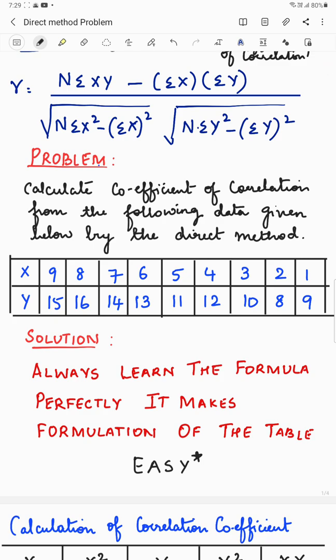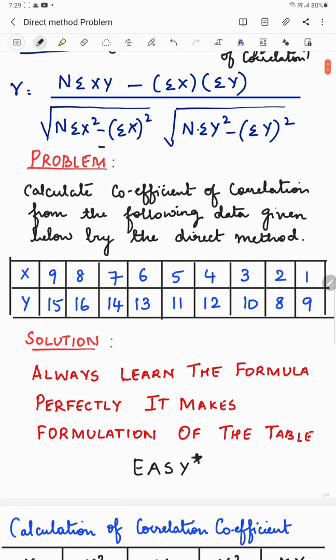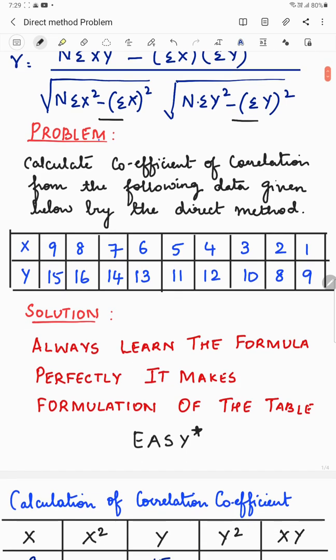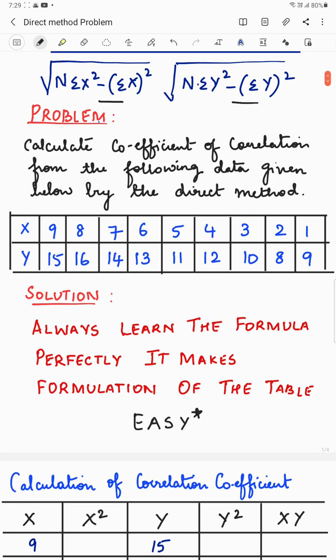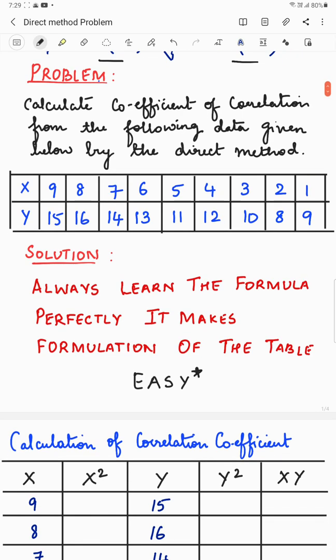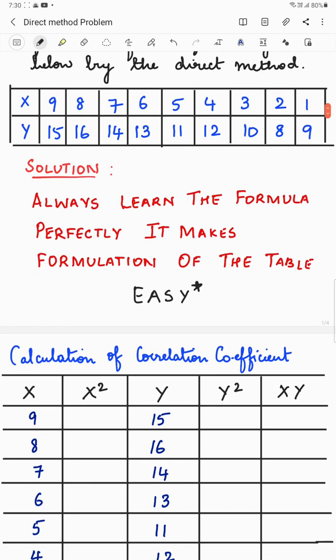Under root n summation x square minus summation x whole square. This is also a point where people tend to make mistakes. So learn this formula perfectly. Calculate coefficient of correlation from the following data given below using direct method. This is the data.